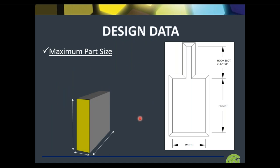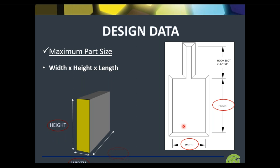One of the things we need to get started is working on the maximum part size. We ask: how big is the widget we're trying to produce? Does it make sense to have one big widget or can we put multiple widgets in the space provided? We're always looking at width, height, and length. On the right you can see a window of opportunity — left to right is our width, and then our height — so the product can move through the process. If you're doing small components, it might make sense to fill that window of opportunity.